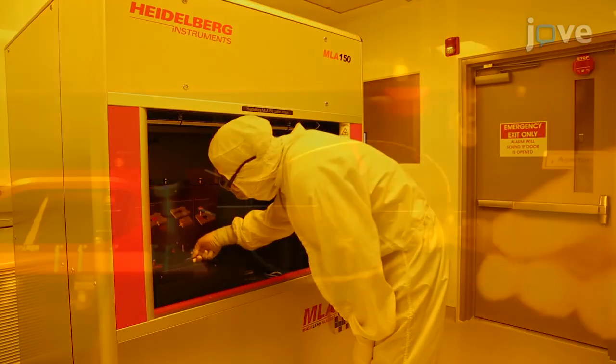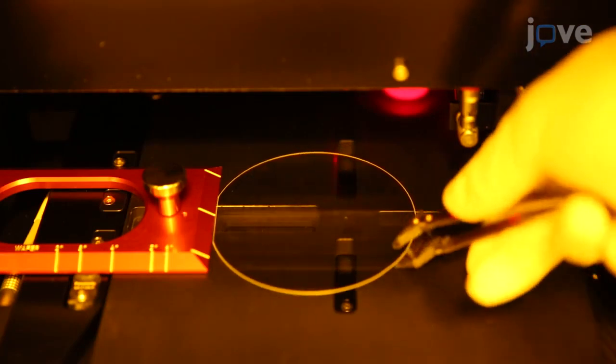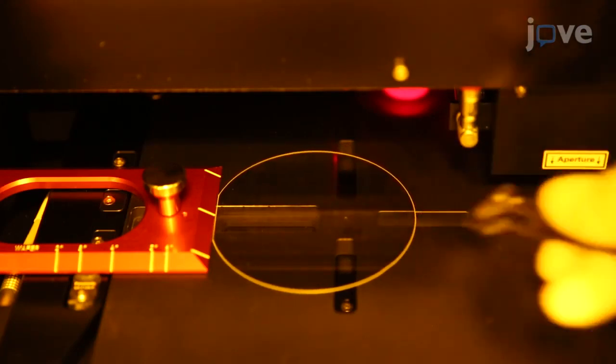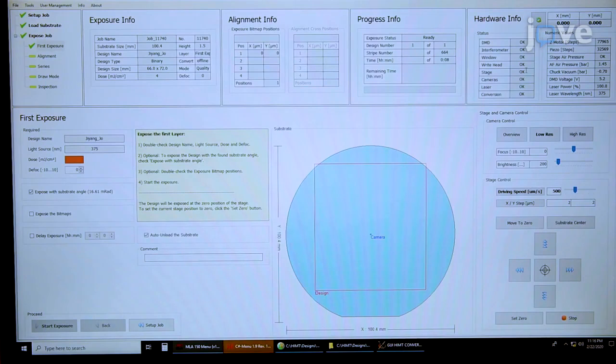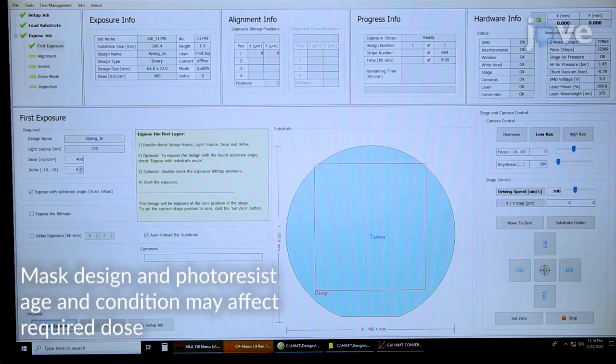To expose the photoresist to ultraviolet energy, transfer the wafer to the mask aligner. With the mask aligner set to deliver light at 375 nanometers, expose the photoresist to an energy dose of 400 millijoules per square centimeter.